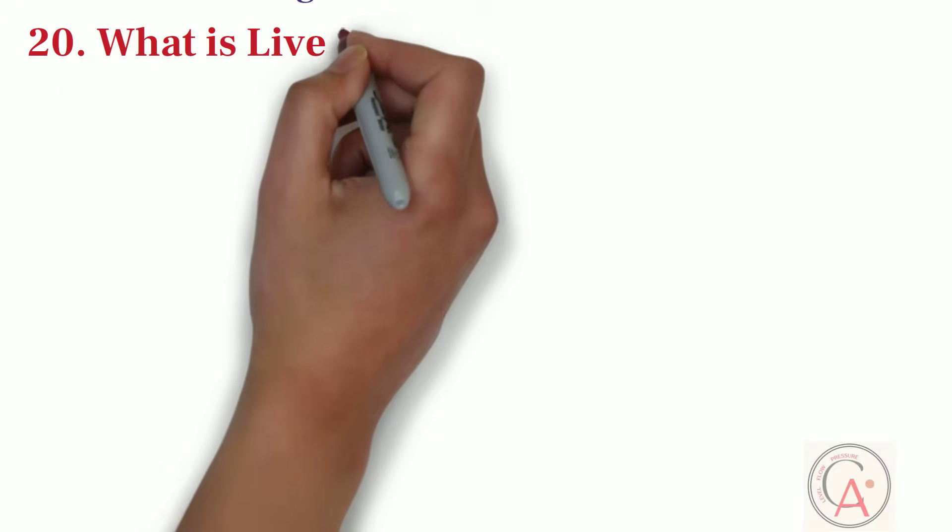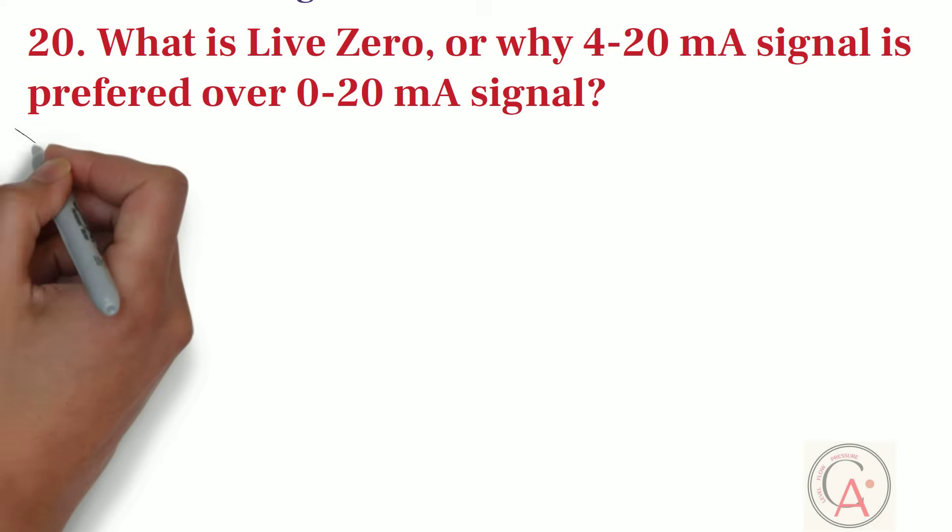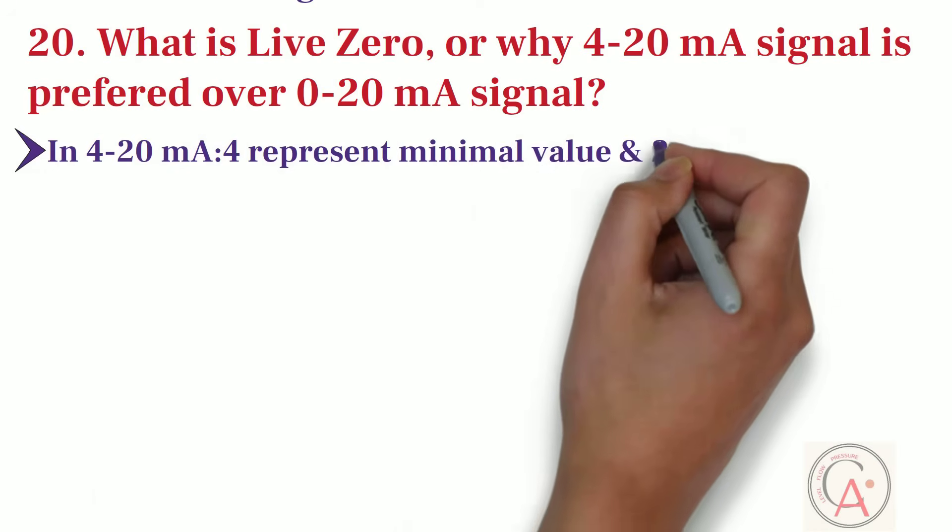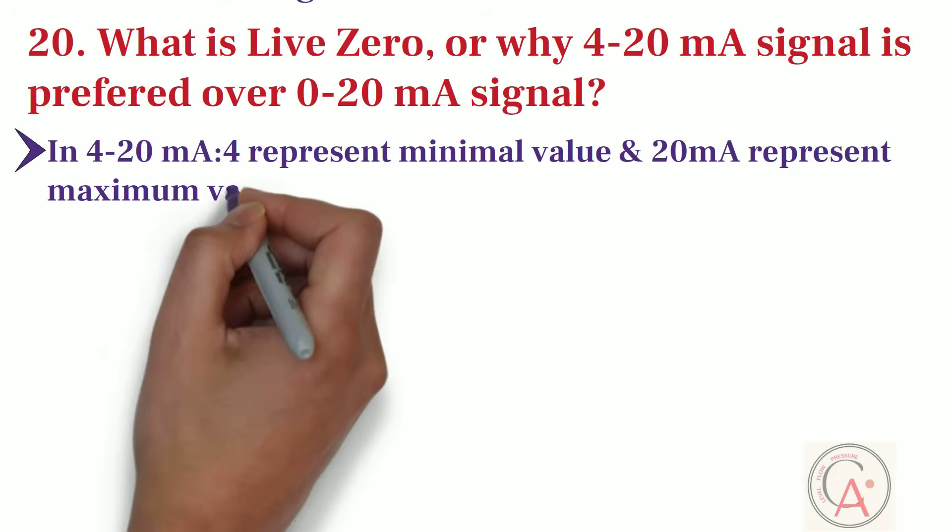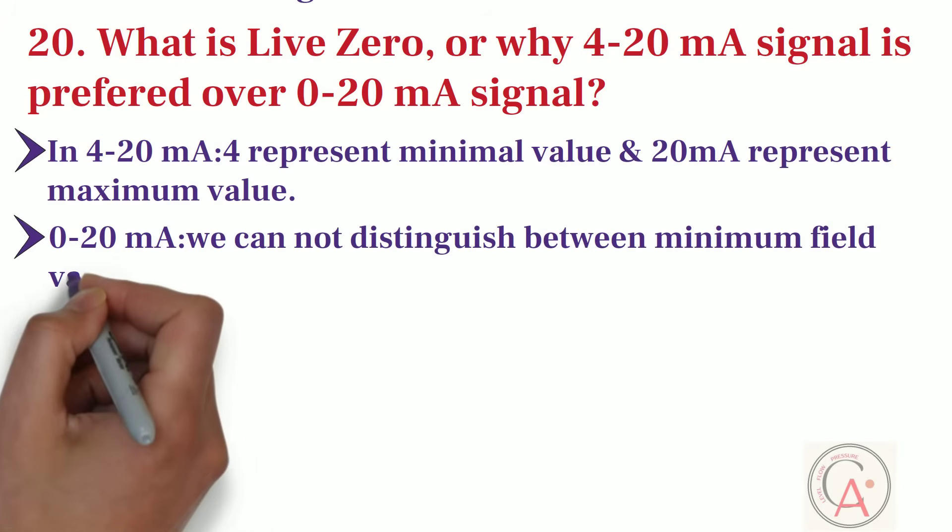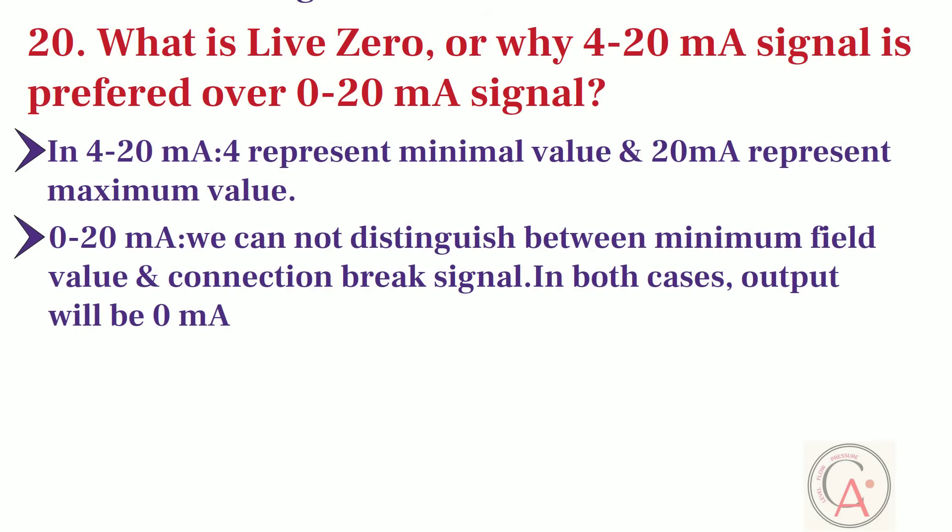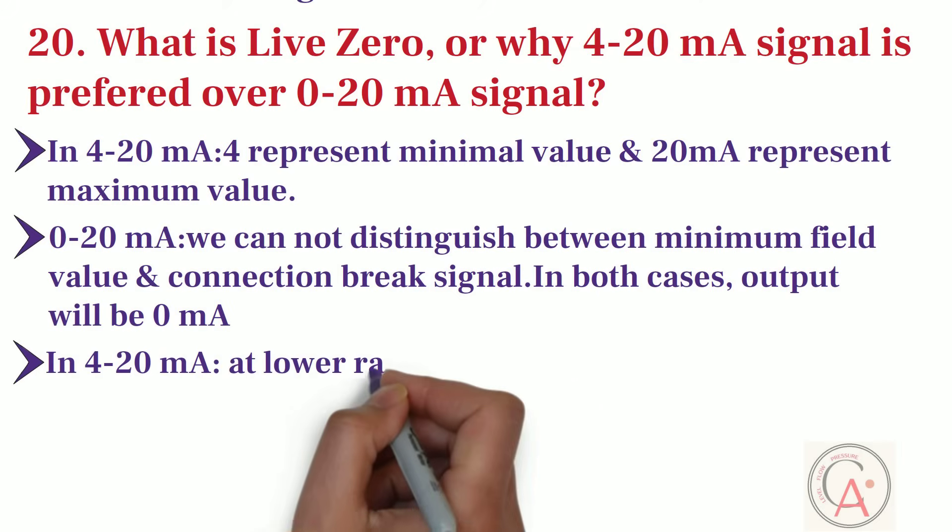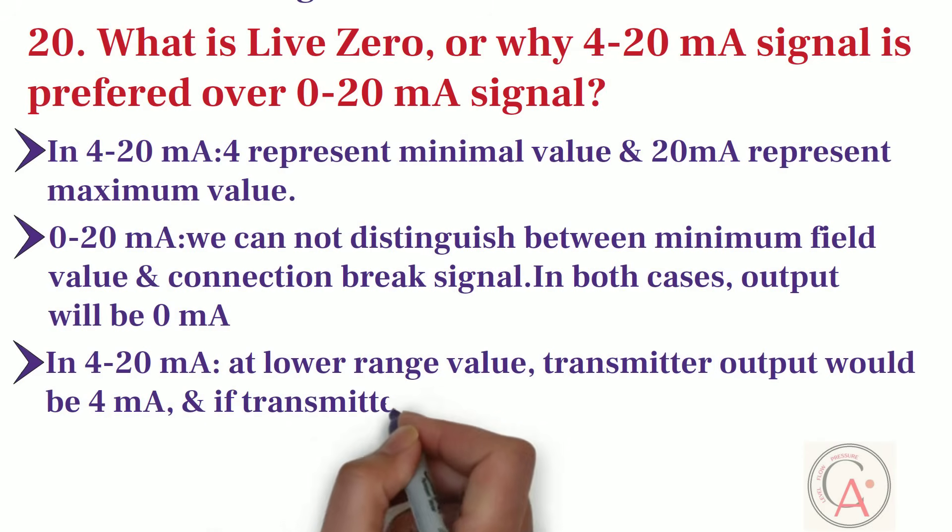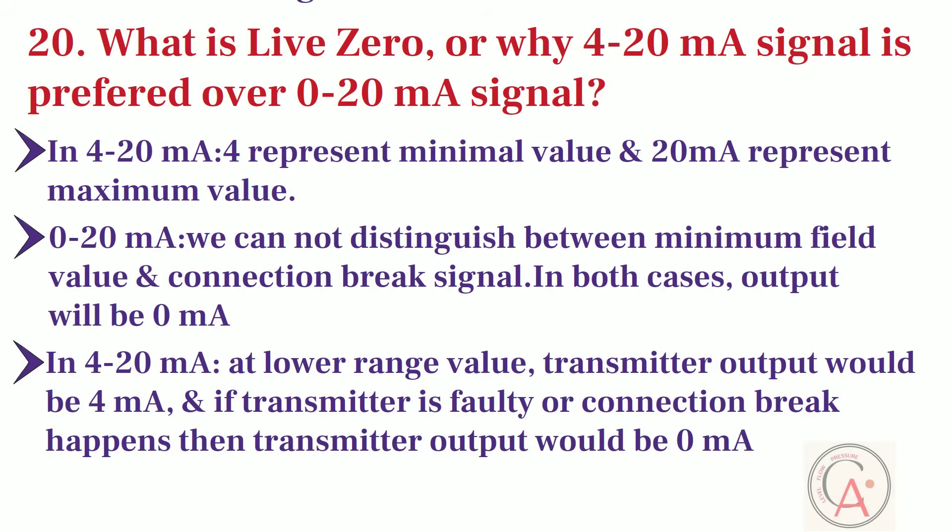Another important question is, what is live zero, or why 4 to 20 mA signal is preferred over 0 to 20 mA signal? In 4 to 20 mA signal, 4 mA represent minimal value, and 20 mA represent maximum value. With 0 to 20 mA signal, we cannot distinguish between minimum field value and connection break signal. In both cases, output will be 0 mA. However, in 4 to 20 mA signal, at lower range value, transmitter output would be 4 mA, and if transmitter is faulty or connection break happens, then transmitter output would be 0 mA.